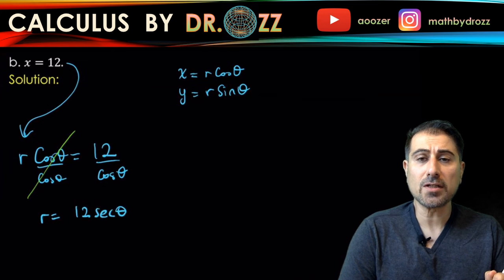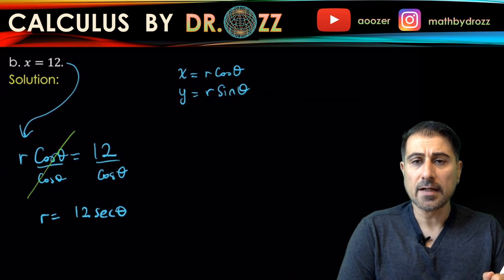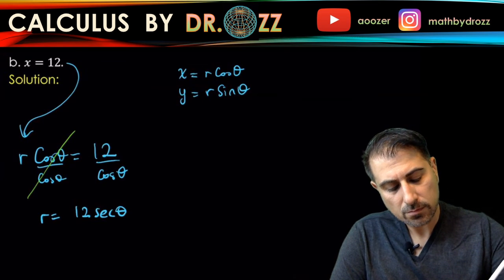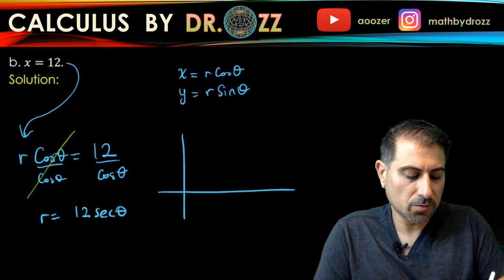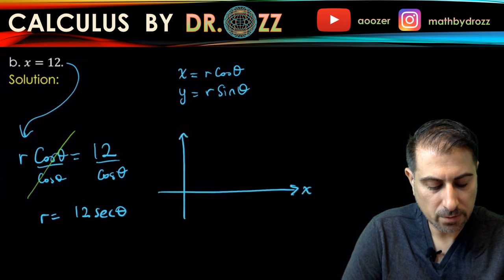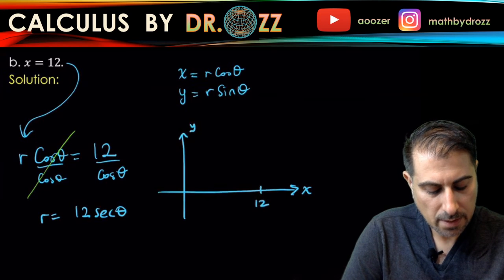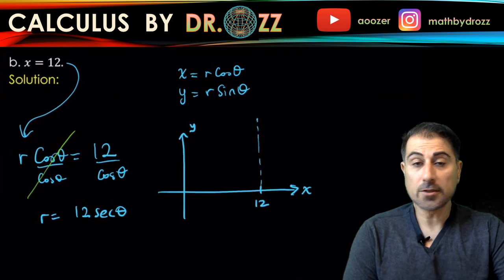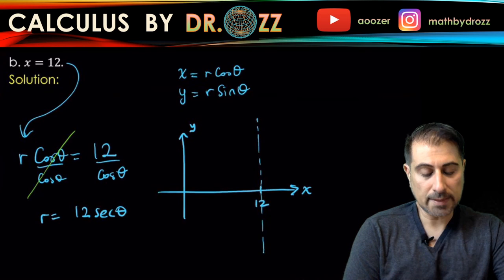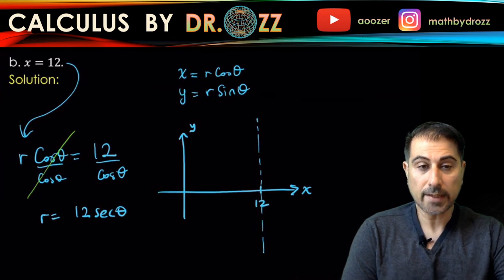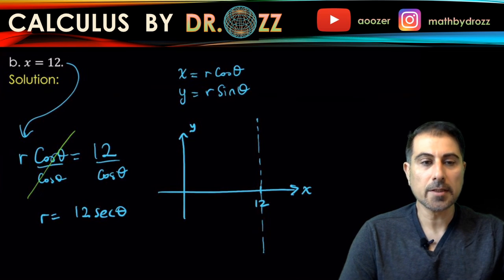So by the way, x equals 12 defines a vertical line here. Let's say this is 12, so we have a vertical line. And polar representation of that is r equals 12 secant theta. All right, that takes care of part b.